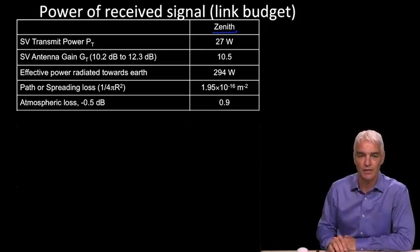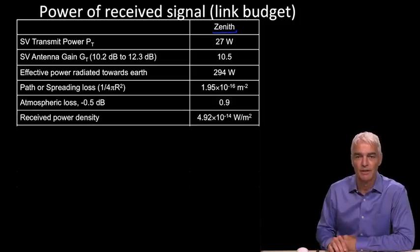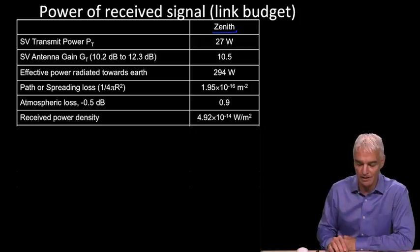And then we have to account for atmospheric loss. This is conventionally put at -0.5 dB, which means about 90% of the signal makes it through the atmosphere. And so we multiply those things together, and that gives us the received power density as shown.